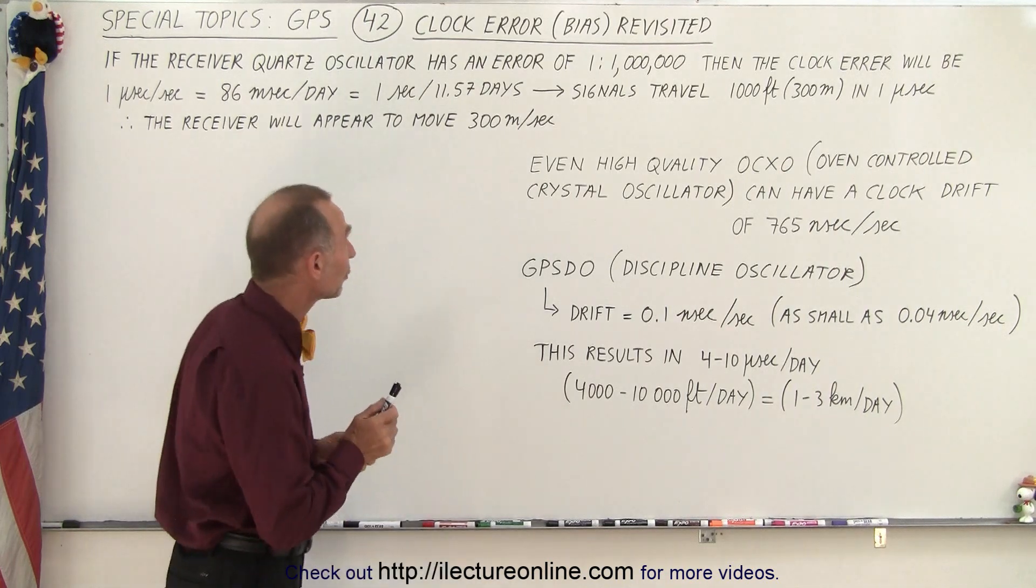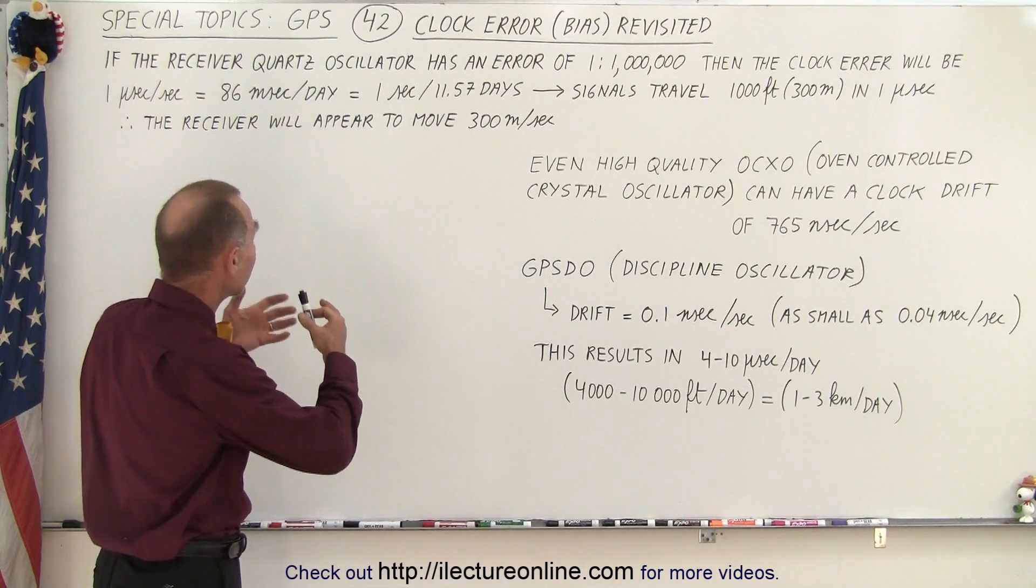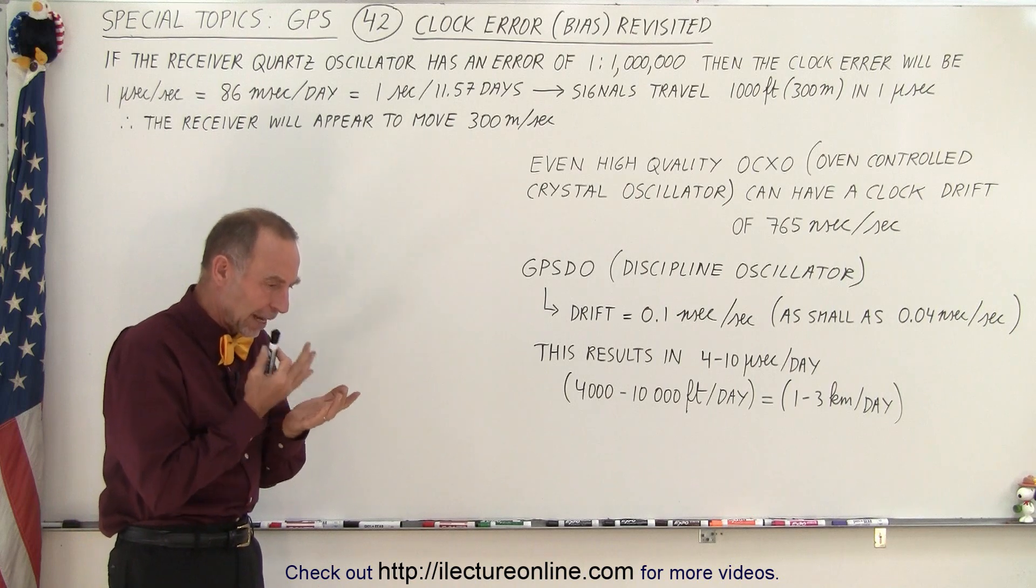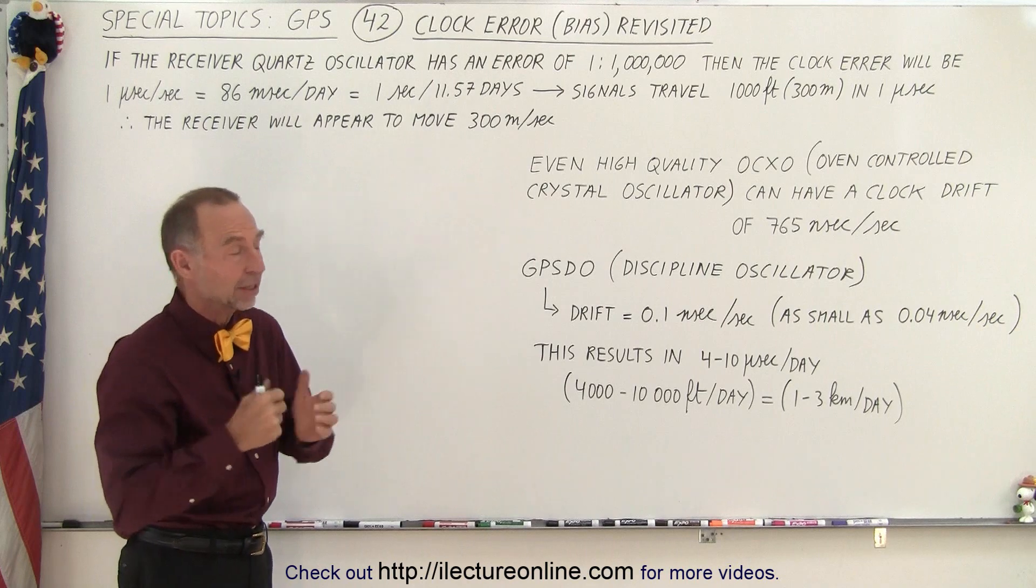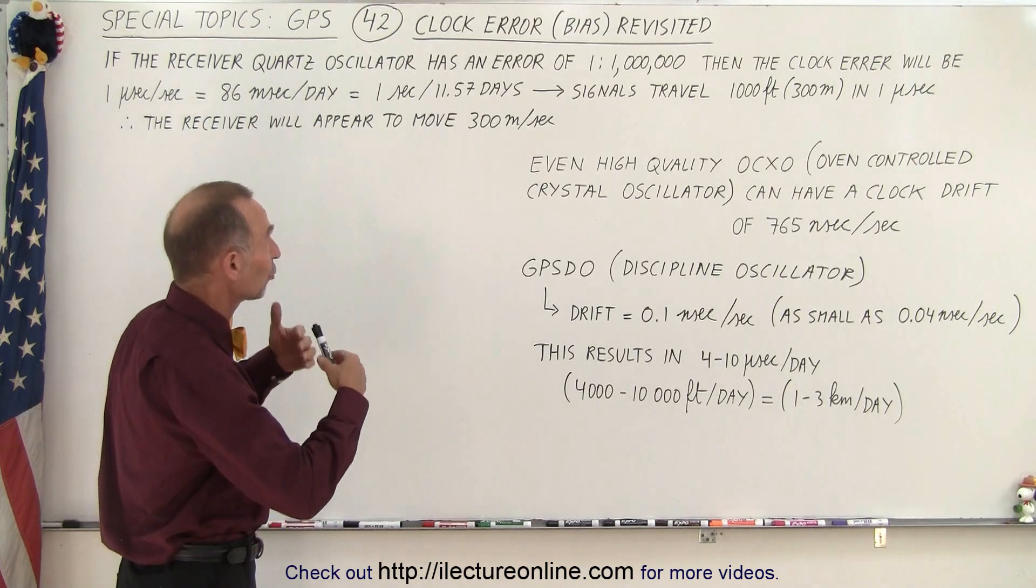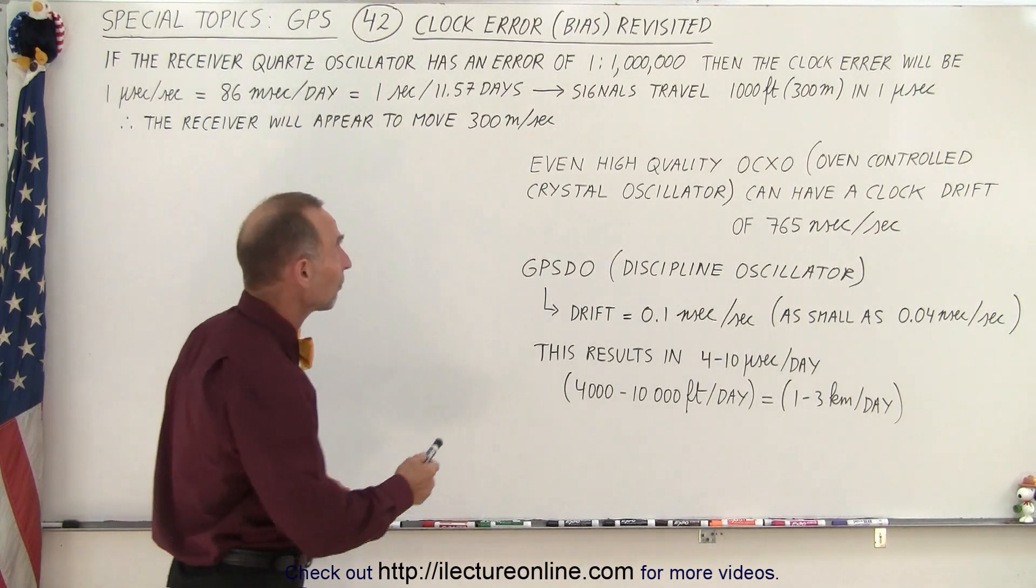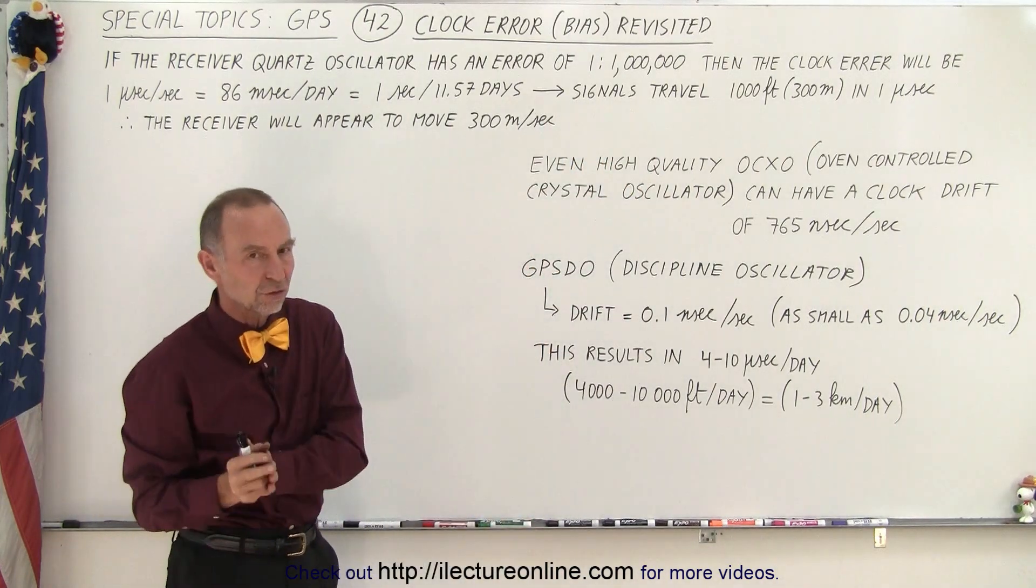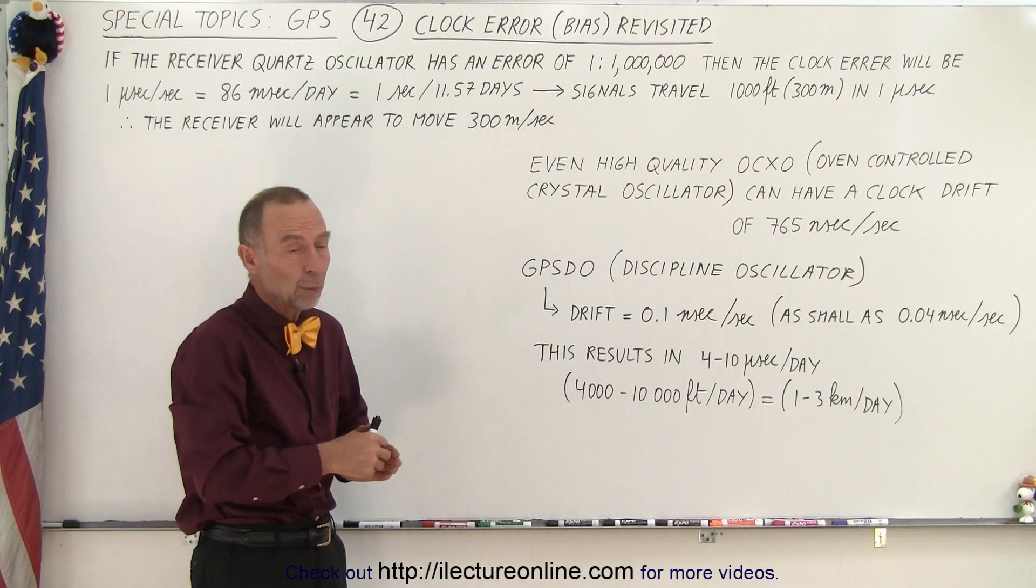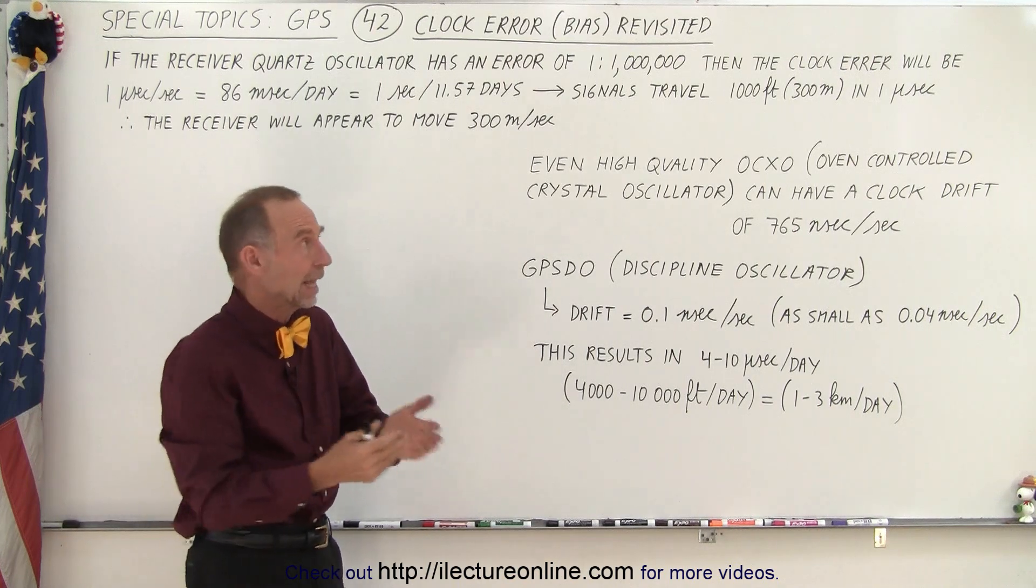So what we're doing here is assuming that an oscillator has a certain error, and that's usually measured in the drift per second. In this particular case, if we assume that we have a one in a million drift, that means for every one million seconds you're off by a second, or for every one million nanoseconds you're off by one nanosecond.